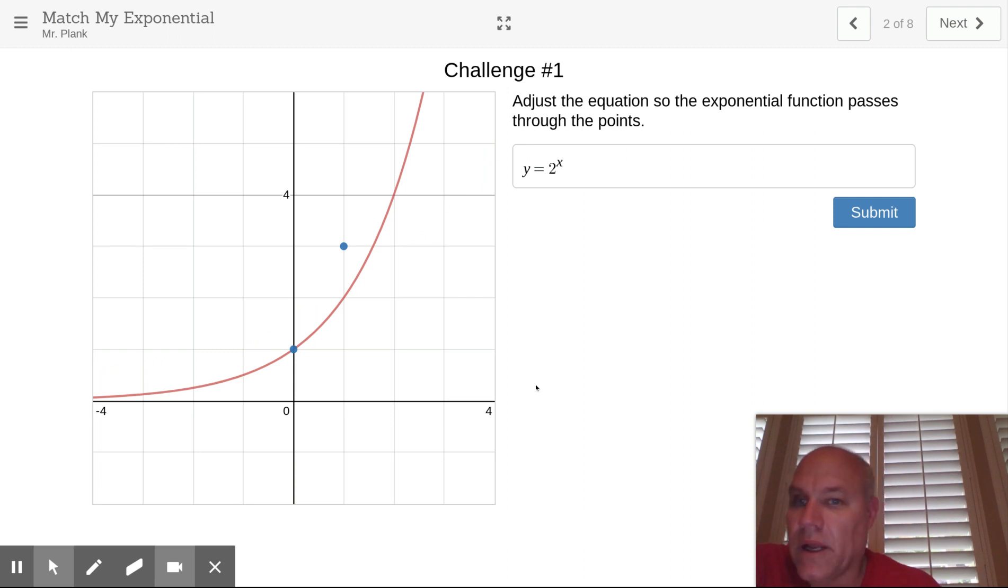On challenge number one, you can see that it goes through 0, 1. So we know our a value is 1, so we have really y equals 1 times 2 to the x, but that misses. When x is 1, what to the first power is going to get you where you have 3? That's right, 3. So let's go in here and change this to 3 to the x. Bingo! Got it.